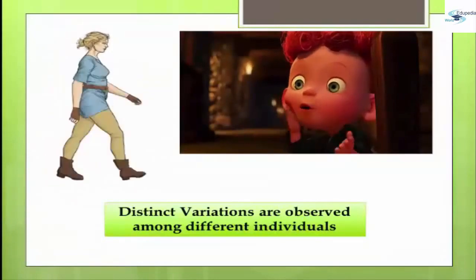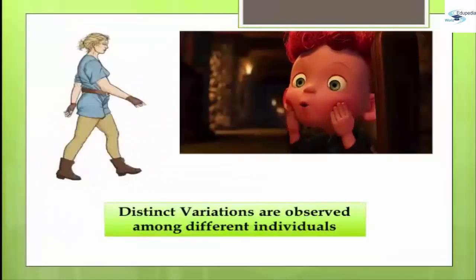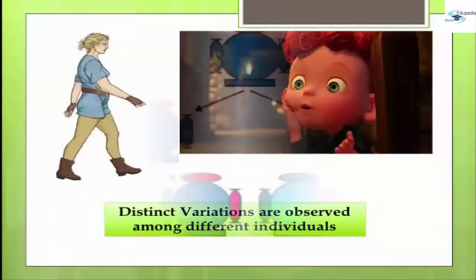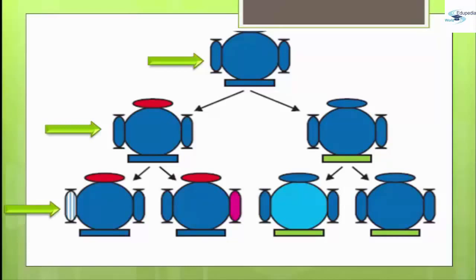Inheritance from the previous generation provides both a common basic body design and subtle changes in it for the next generation. The original organism at the top will give rise to say two individuals, similar in body design but with subtle differences. Each of them in turn will give rise to two individuals in the next generation. Each of the four individuals in the bottom row will be different from each other, while some differences will be unique and others will be inherited from their respective parents.